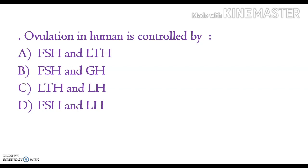Ovulation in humans is controlled by FSH and LH. FSH means follicular stimulating hormone, LTH means lactotropin hormone (also known as prolactin), GH means gonadotropin hormone, and LH means luteinizing hormone. The correct answer is FSH and LH.